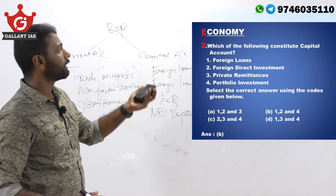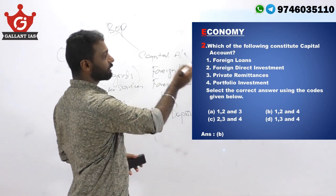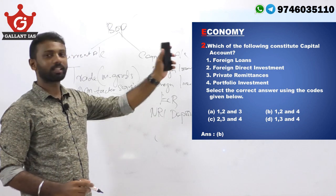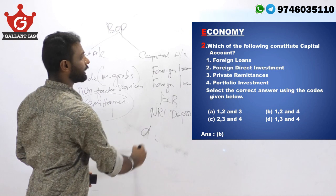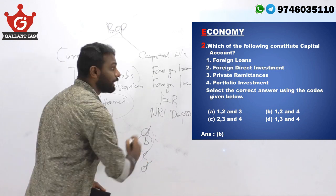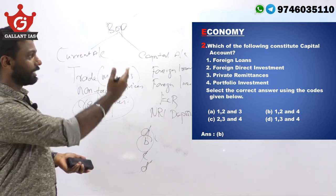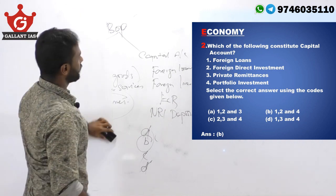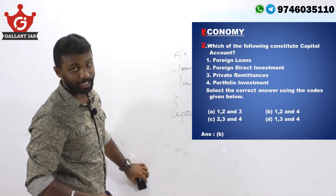When moving on to the question — which of the following constitute capital account — we know that statement number three, private remittances, forms part of the current account, so it cannot be under capital account. We can therefore eliminate options A, C, and D. The answer is option B, because foreign loans, foreign direct investments, and portfolio investment all come under the capital account.